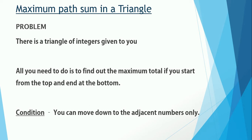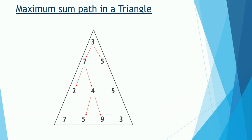The condition is that you can move down to adjacent numbers only. Here is our triangle — we start from 3 and go to the bottom, finding the maximum sum path. At 3 we can move to either 5 or 7. At 7 we can move to 2 or 4, but from 7 we cannot go to 5 because 5 is not adjacent. Similarly, from 4 we can move to 5 or 9, but not to 7 or 3.